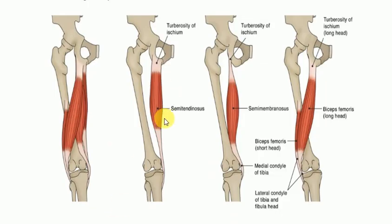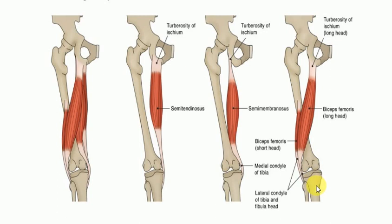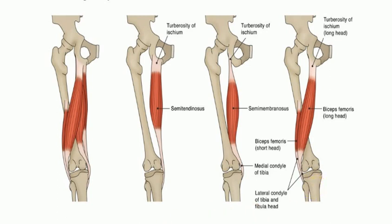One more point: semitendinosus and semimembranosus insert on the medial tibial shaft and medial tibial condyle, so they are also medial rotators of the leg. Biceps femoris, inserting on the lateral side of the head of the fibula, is a lateral rotator of the leg as well. See you in the next video — take care and thanks for watching.